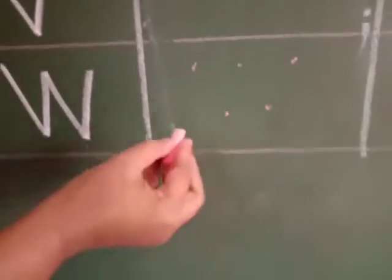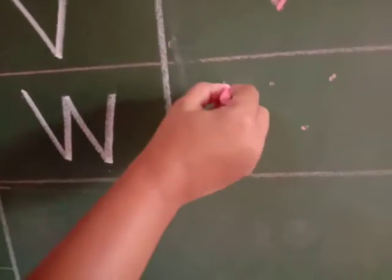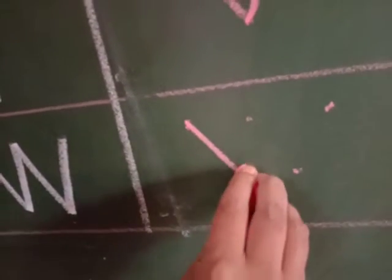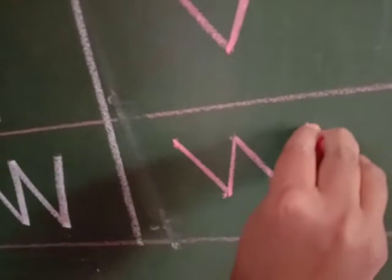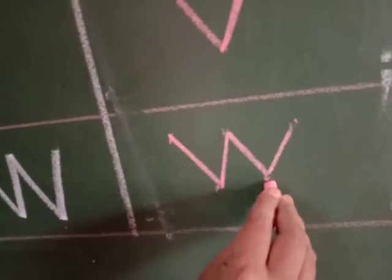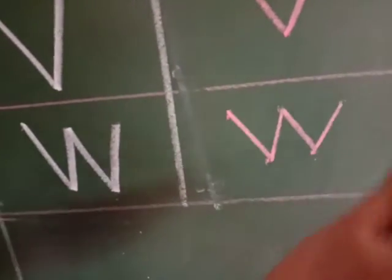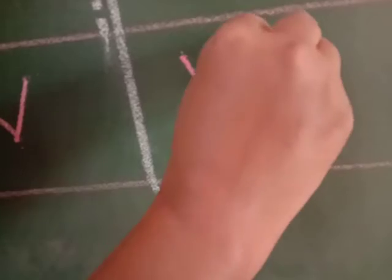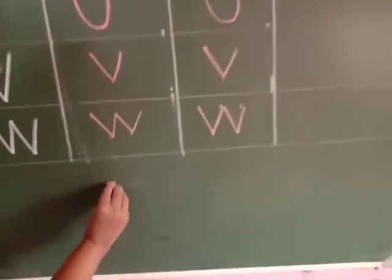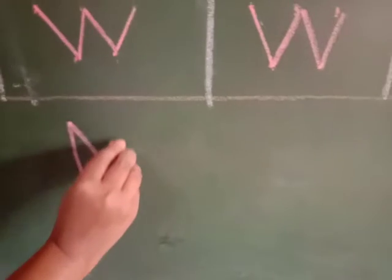And for W, there are many many dots — but don't get confused. It is just like M, like that. One, two, three and four — slanting line, upside slanting, downside slanting, again slanting line. Likewise you will complete the letter W. Down, up, down, up. So if we flip M upside down, what do we get? W! That's how we make W.